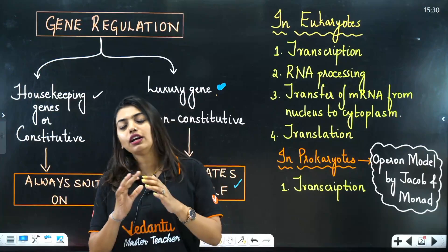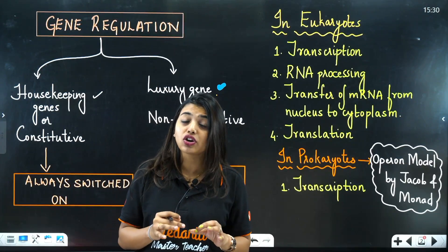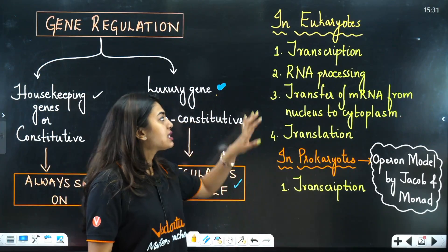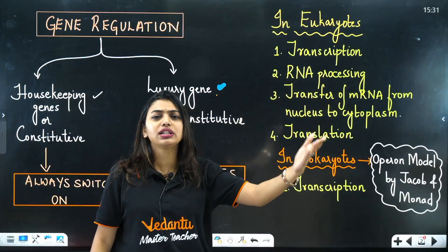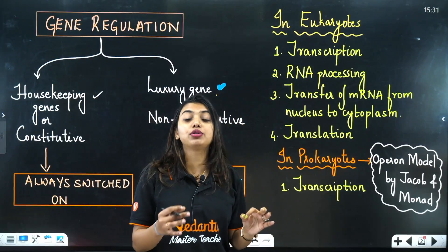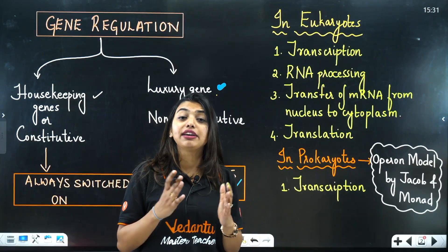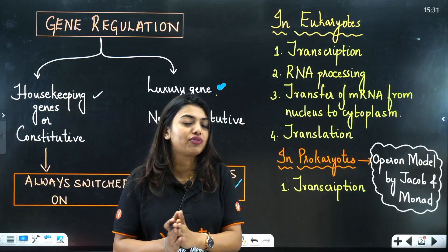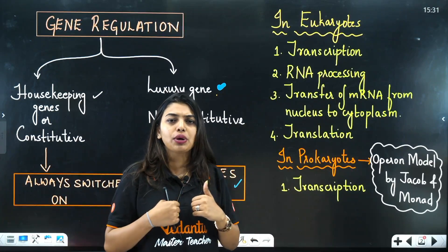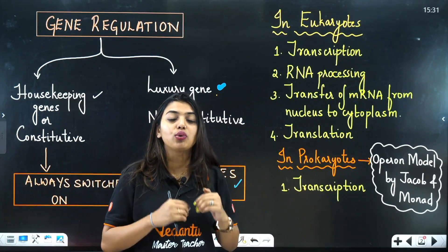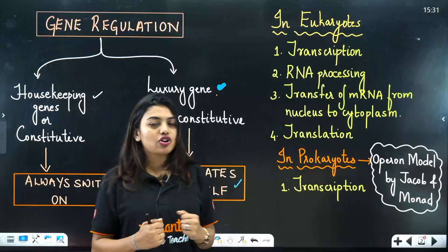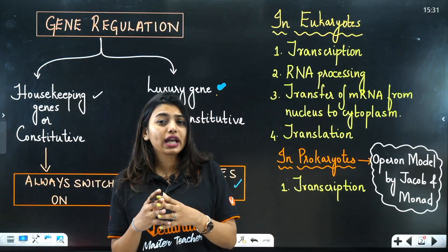Now, when do genes actually get switched off? In eukaryotes, there are four places where a gene can switch off: first, during transcription; second, during RNA processing — that is, during tailing and capping of the mRNA; third, when the mRNA is transferred from the nucleus to the cytoplasm for translation; and fourth, during translation itself.